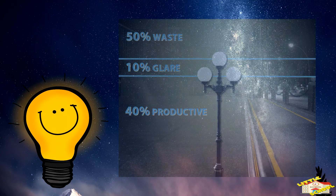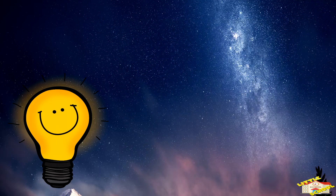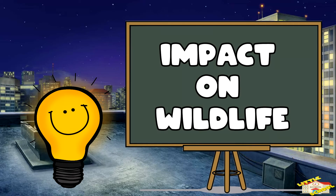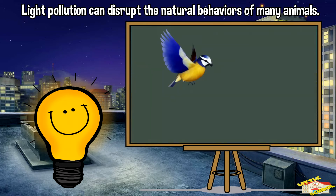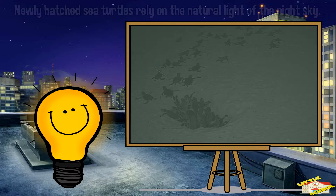A significant amount of the light used for outdoor lighting is wasted by being directed where it's not needed. Light pollution can also disrupt the natural behaviors of many animals, including birds, insects, and sea turtles.